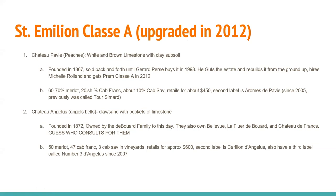In 2012, two new Premier Grand Cru Classé A estates were added. Château Pavie — 'pavie' translates to peaches — features white and brown limestone over clay subsoils. Founded in 1867, it was sold until Gérard Perse bought it in 1998, completely gutted and rebuilt the estate, and hired Michel Rolland. It received Premier Grand Cru Classé A classification in 2012. It typically has a higher proportion of Merlot, with less Franc and Cabernet Sauvignon. Retail price is around $450, and the second label is Arôme de Pavie since 2005, previously called Tour Cermard.